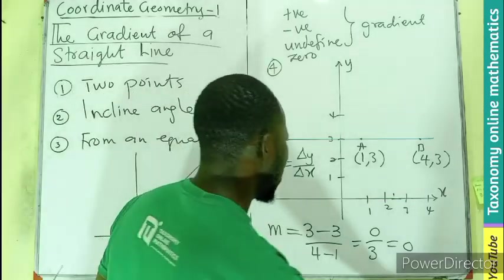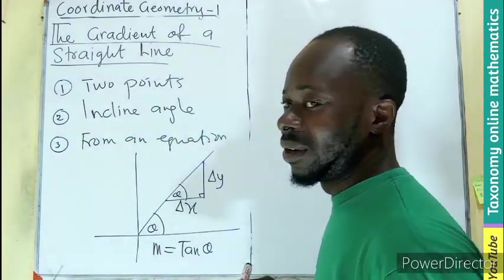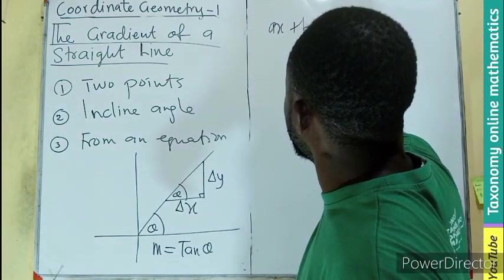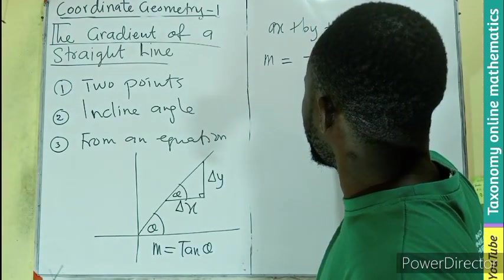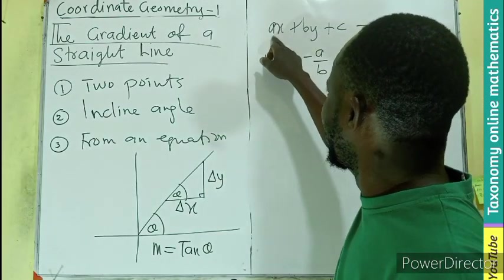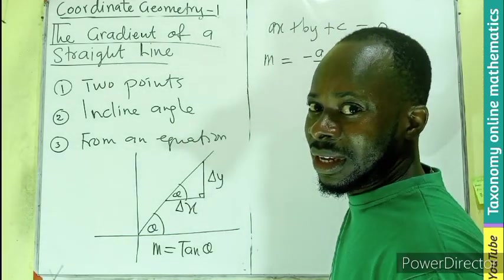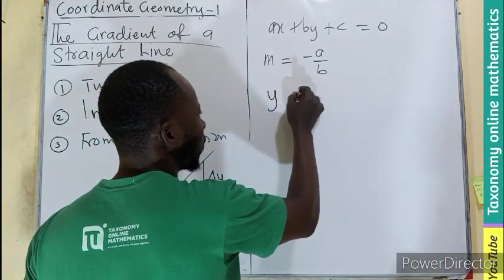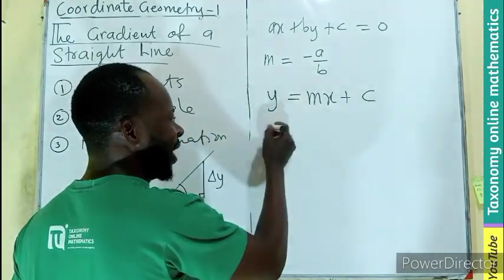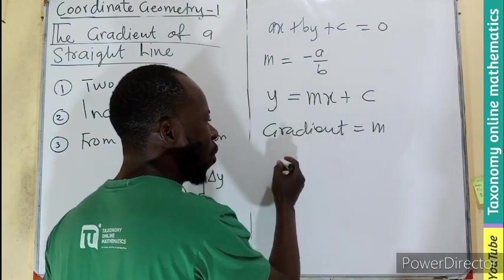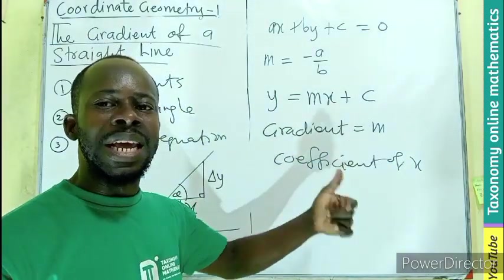The third way is when we are given an equation of the straight line. The general form of the equation of a straight line is ax + by + c = 0. If asked to find the gradient, m equals negative a over b — that is, negative the coefficient of x over the coefficient of y. If the equation is in slope-intercept form — y = mx + c — then the gradient is simply m, which is the coefficient of x. Whatever value is in front of x becomes the gradient.